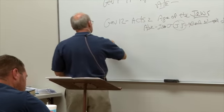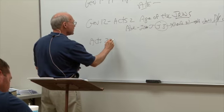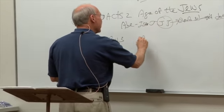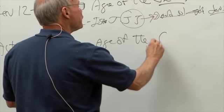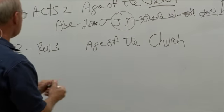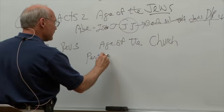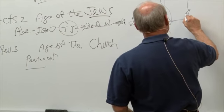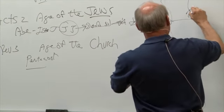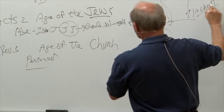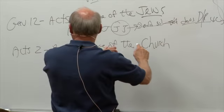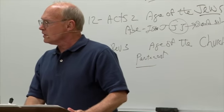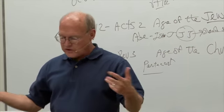The third part starts in Acts chapter 2 and goes to Revelation chapter 3 — called the age of the church. Beginning in Acts chapter 2 on the day of Pentecost, the Holy Spirit came down and baptized believers, placing them in Christ, and that's the beginning of the church. Starting in Acts chapter 2, going to Revelation chapter 3, we find what we call the age of the church. That's what we're in now — we are the church, the body of Christ.